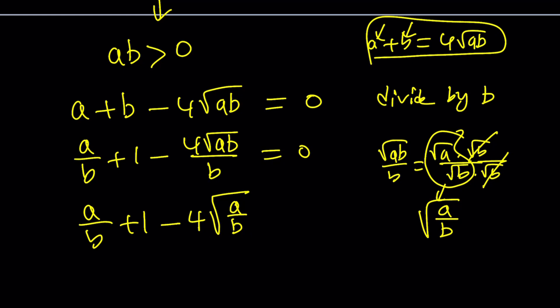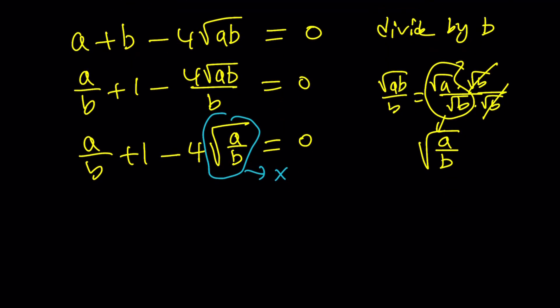So we got this expression now, and we're going to use substitution, because it makes sense. Let's go ahead and replace the square root of A over B with something. How about X? We haven't used X for a while. And then, A over B is just going to be X squared. And we get X squared plus 1 minus 4X equals 0. Now, this is quadratic.